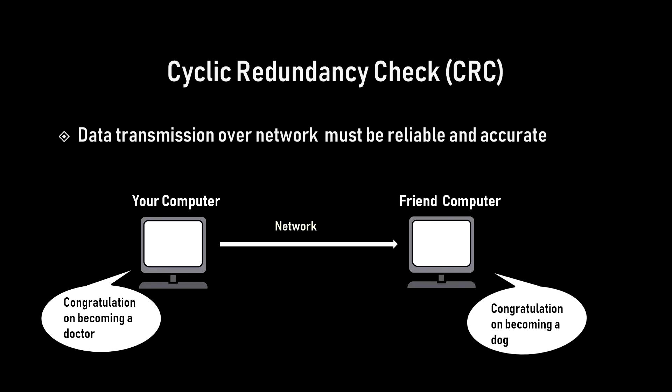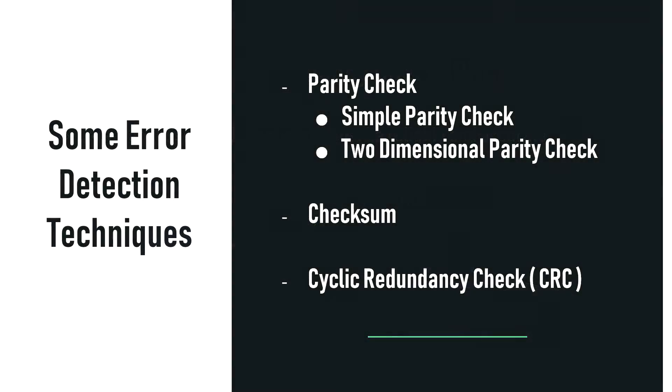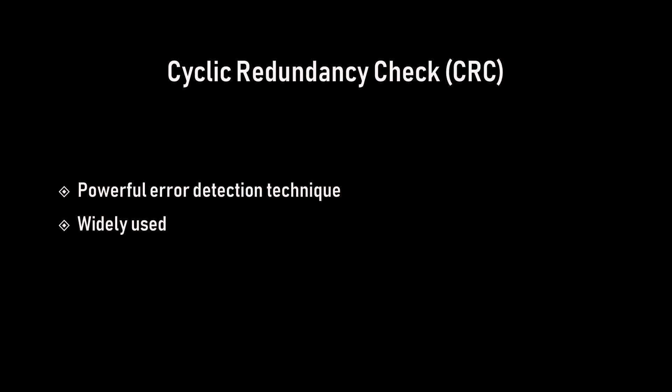Nobody wants this, but many factors can alter or wipe out one or more bits of a message. We clearly don't want this kind of error to happen, so we need to control it. To control and correct this kind of error we need to first detect it. There are different error detection techniques, and CRC or Cyclic Redundancy Check is one of them — it is a very powerful and widely used error detection technique.